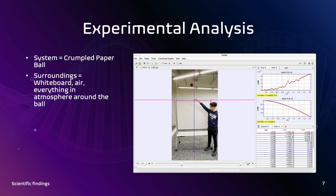Our experimental analysis had the following setup, where I had my friend hold up a paper ball approximately 1.88 meters above the height of the ground, which is at the top of the whiteboard. Our system includes the crumpled paper, while the surroundings include the whiteboard, the air, and everything in the atmosphere around the ball, which include me and my friend.